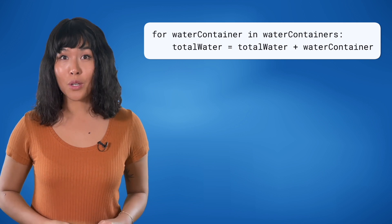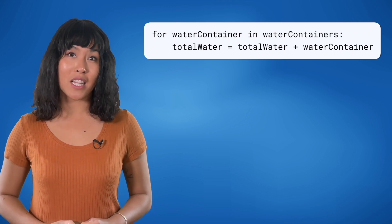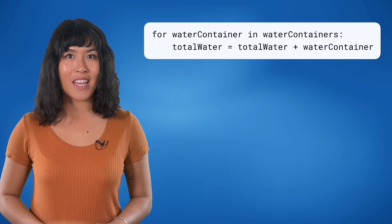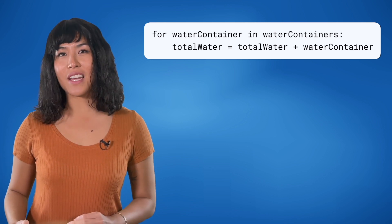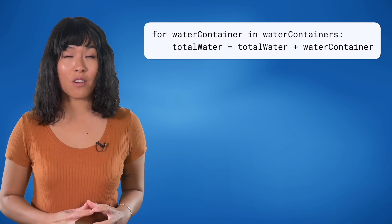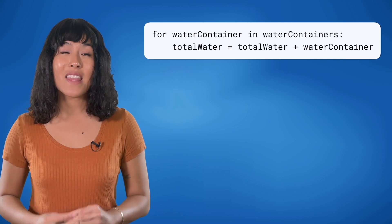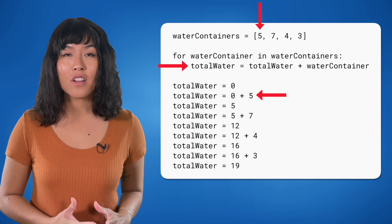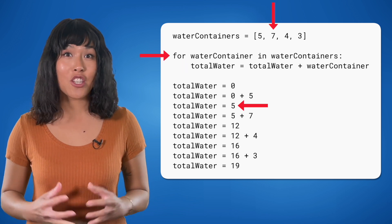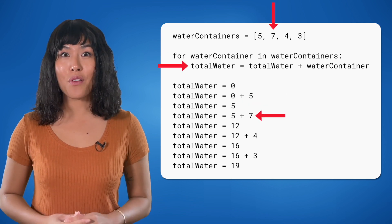We then use a for loop to iterate over each element named water container in the water containers array. For each iteration, the variable water container holds the amount of water in the current container. We add water to total water during each iteration, accumulating the total amount of water.